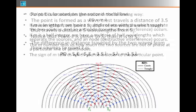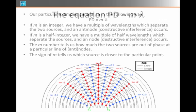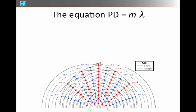These examples generalize as follows: the path difference between the two sources to a given location — which we call PD for path difference — always equals a multiple of the wavelength. If M is an integer, we are on an antinode and constructive interference occurs. If M is a half-integer, we have a node and destructive interference occurs. The number M tells us how much the two sources are out of phase along a particular line of nodes or antinodes, and the sign of M tells us which source is closer to that point. Our equation is: PD equals M lambda.